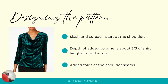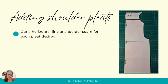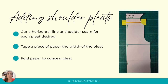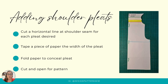In this design they've added pleats to the shoulder seams. What we'll do is cut a horizontal line at our shoulder seam for each desired pleat. Here I've added one pleat, but you could add as many as you want. We'll tape a piece of paper with the width of the pleat in that cut area, and then we're going to fold the paper to conceal the pleat. We'll cut our pattern and this will give us the shape of the pleat within the pattern.